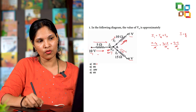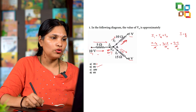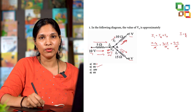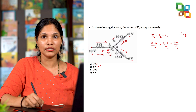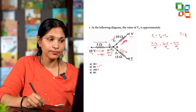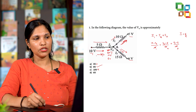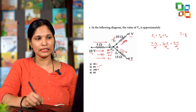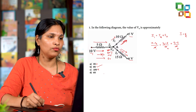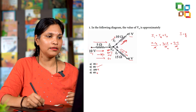For 10 volts: I1 couldn't flow because the potential difference is 0 (10 V to 10 V), so that's not possible. For 6 volts: I1 could flow, but I3 wouldn't be possible since there's no potential difference from 6 V to 6 V. So we can easily eliminate three options, leaving 8 volts as the answer.